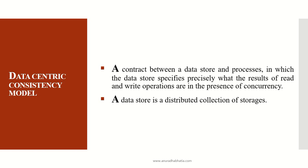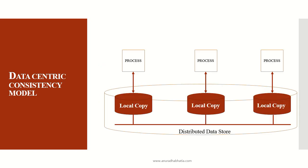The data-centric consistency model contrasts a data store and processes, specifying precisely what the result of read and write operations are in the presence of concurrency. A data store is a distributed collection of storage. If a read and write operation happen simultaneously, we need to know the result. In the scenario shown, I have local copies at three places with processes running simultaneously — if a write-write operation happens, both places must be updated immediately, otherwise it leads to inconsistency.